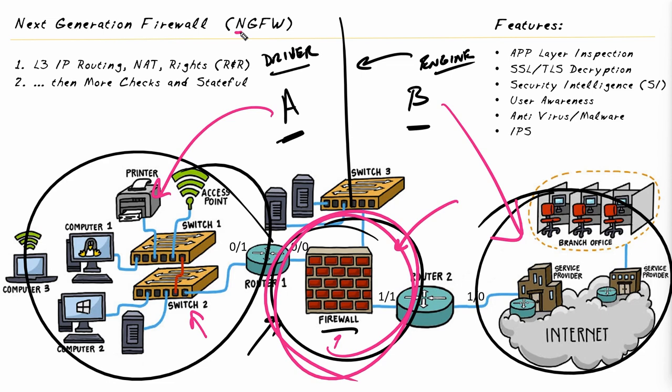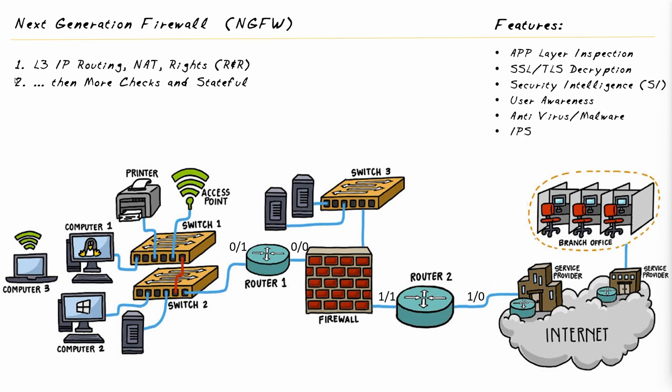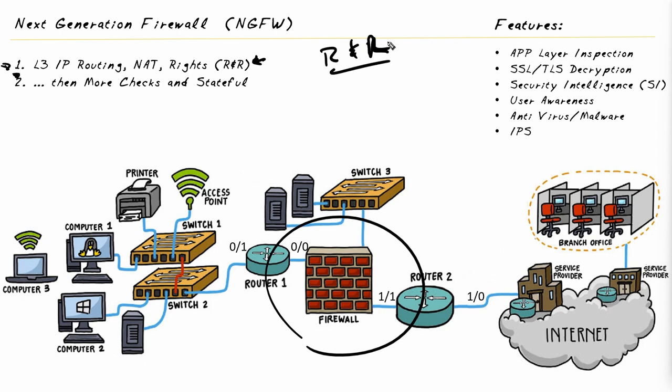Before we get to the advanced features, let's go to rule number one regarding 99% of firewalls. When there's a problem with a firewall and it's not working correctly, it usually comes down to this first rule — which I think of as R and R: Routing, address translation, and Rights (permissions).